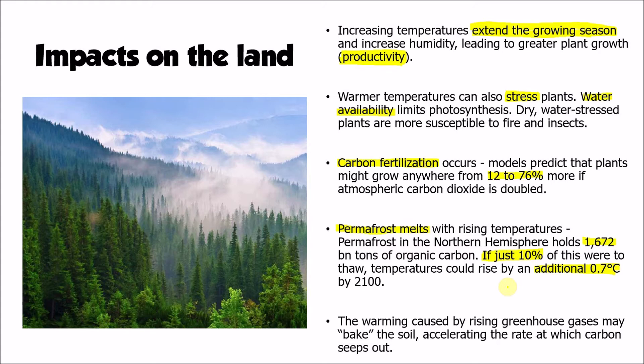The final impact on the land that we need to consider is that the warming of the land, as a result of warming of the atmosphere, is potentially going to bake the soil. That accelerates the rate at which carbon within the soil oxidises with the oxygen in the atmosphere to form carbon dioxide, and therefore accelerates the rate at which we lose that carbon. So we can see that changes to the carbon budget can have significant impacts for rates of photosynthesis and for the melting of permafrost.